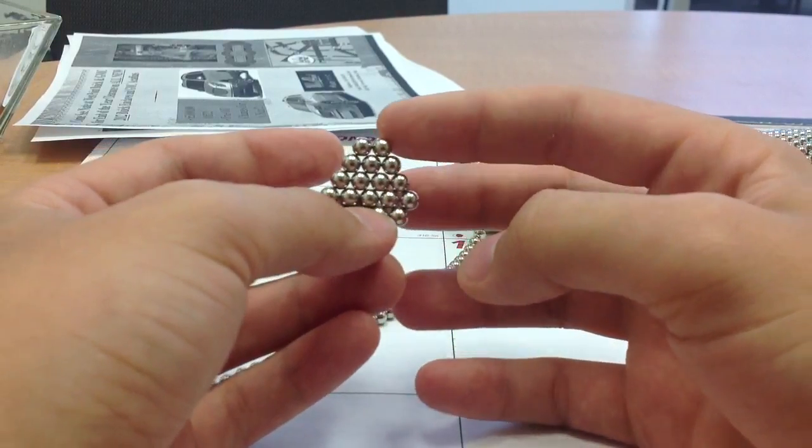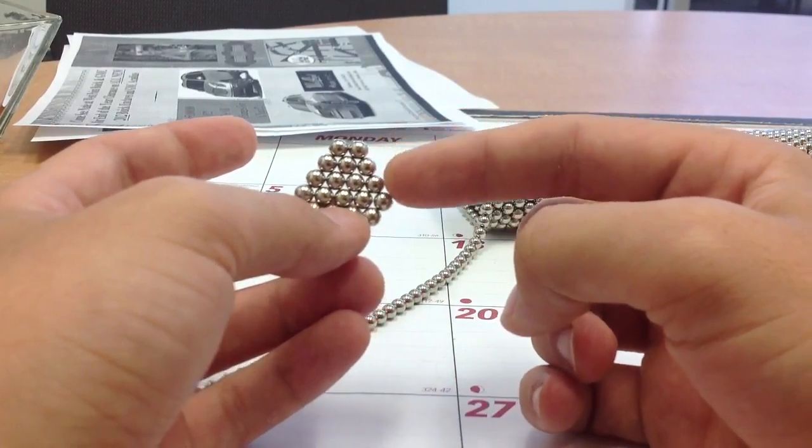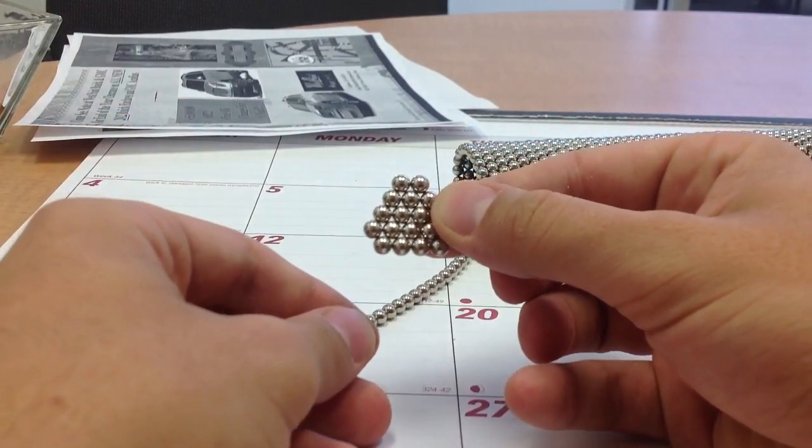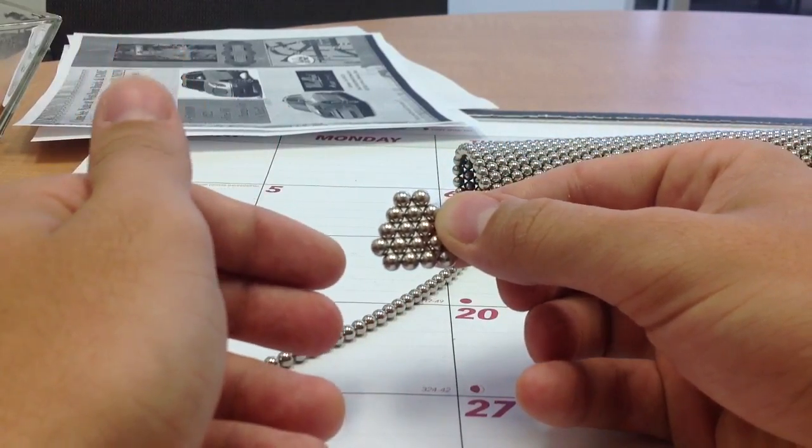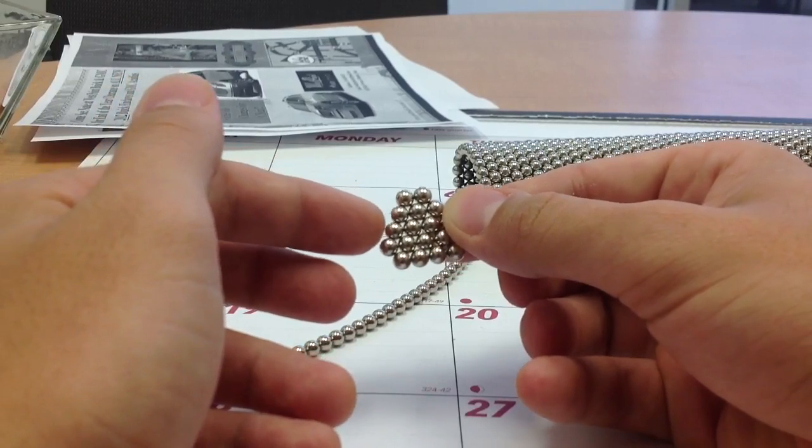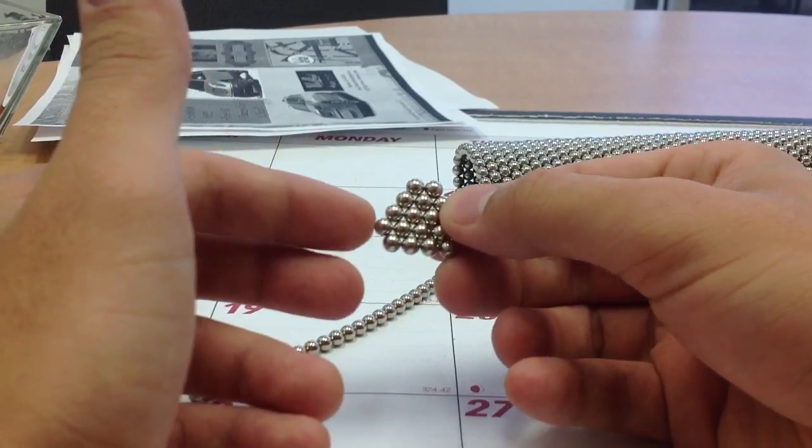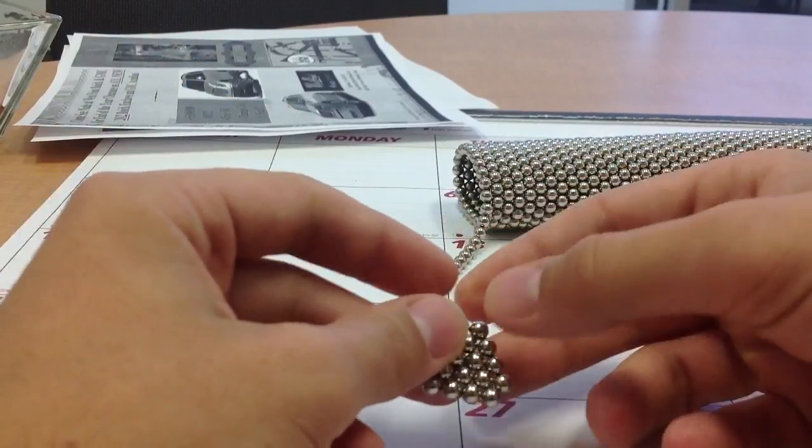So you're going to want it to be like two, three, four, five, four. It's going to be like that every time but in descending order. So the next one will be two, three, four, three instead of two, three, four, five, four.